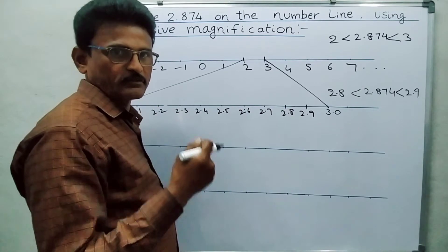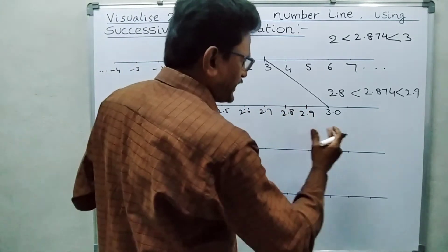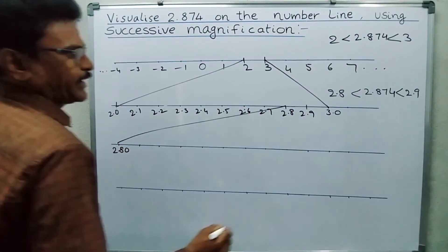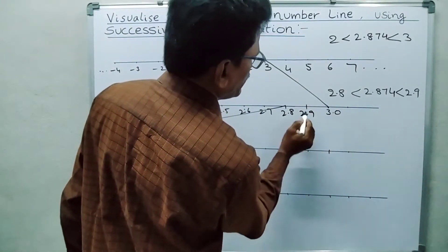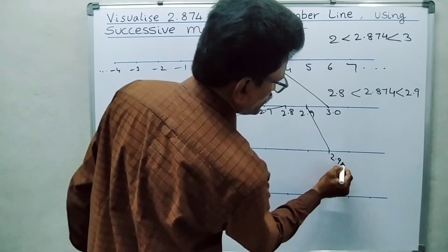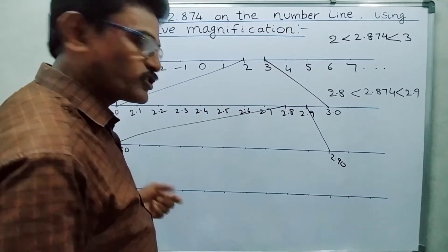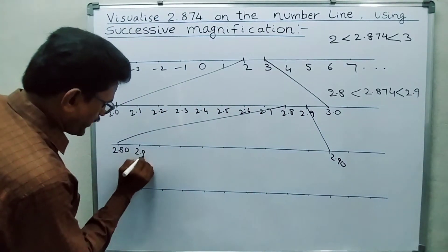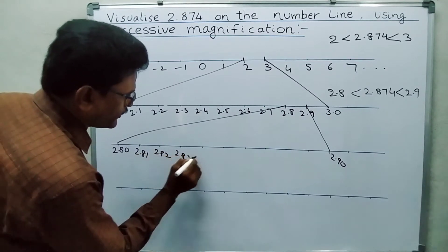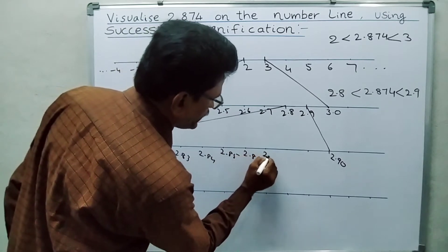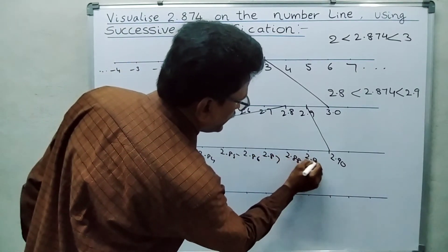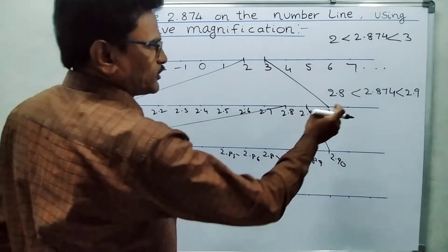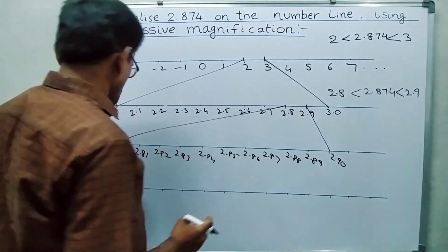Once again using the magnification, we magnify this region 10 times. Suppose this is 2.80 and this one is 2.90. We mark 2.81, 2.82, 2.83, 2.84, 2.85, 2.86, 2.87, 2.88, 2.89, 2.90. Now search the number 2.87 — it is here.